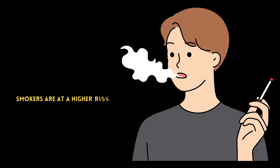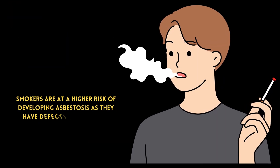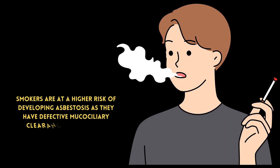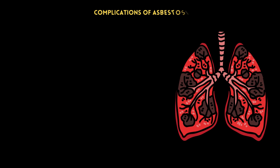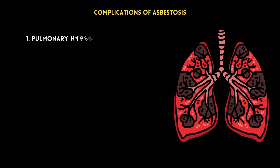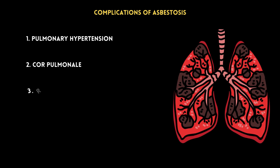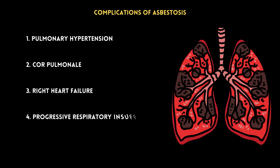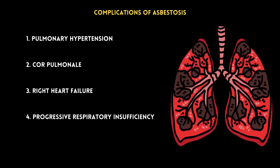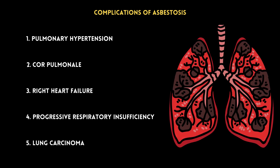Smokers are at a higher risk of developing asbestosis as they have defective mucociliary clearance in the airways. Asbestosis can lead to various complications, including pulmonary hypertension, cor pulmonale, right heart failure, and progressive respiratory insufficiency. In addition, asbestosis is a significant risk factor for the development of lung carcinoma.